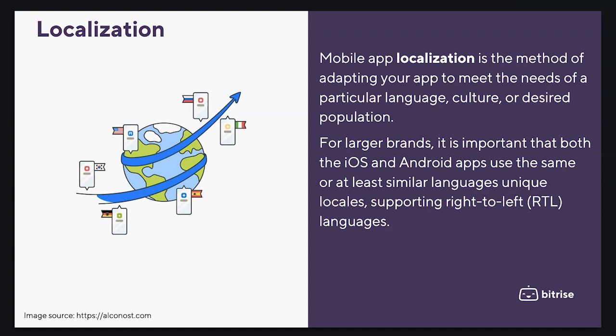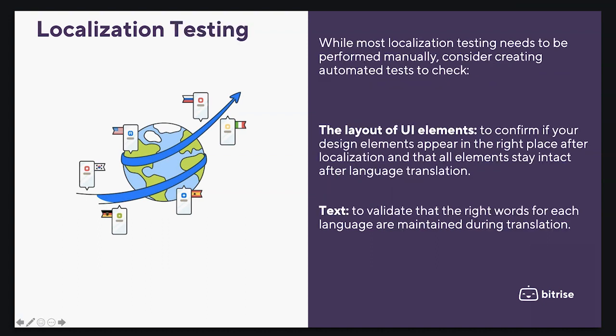For larger brands, it's important that both the iOS and Android apps use the same or at least similar language, unique locales, and support right-to-left languages. While most localization testing needs to be performed manually, consider creating automated tests to check the layout of UI elements.